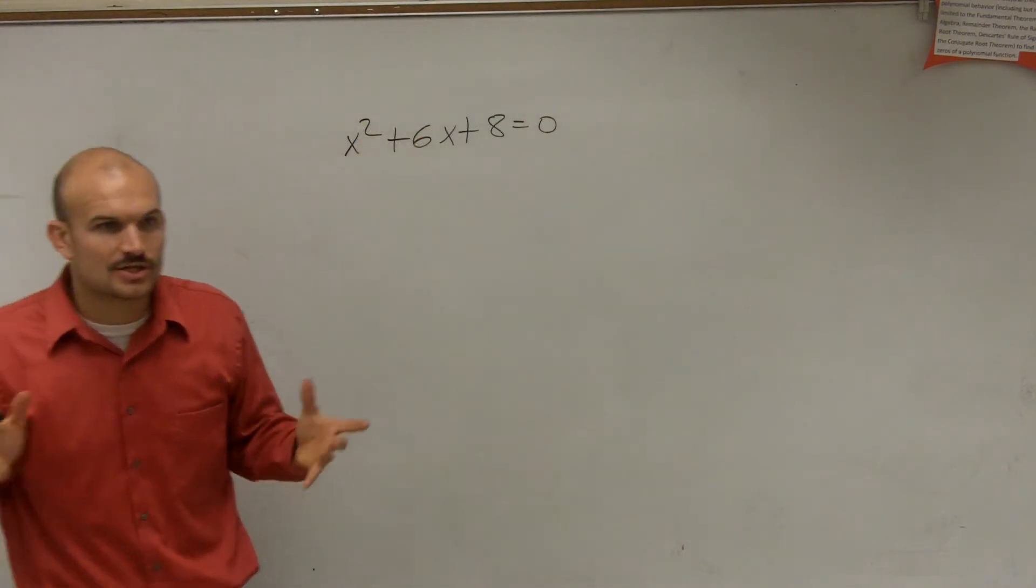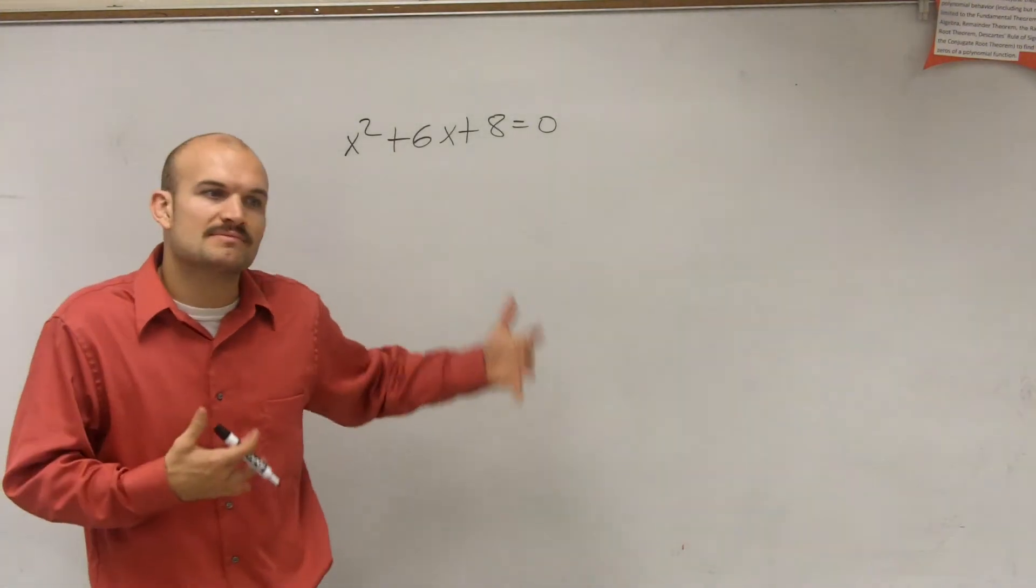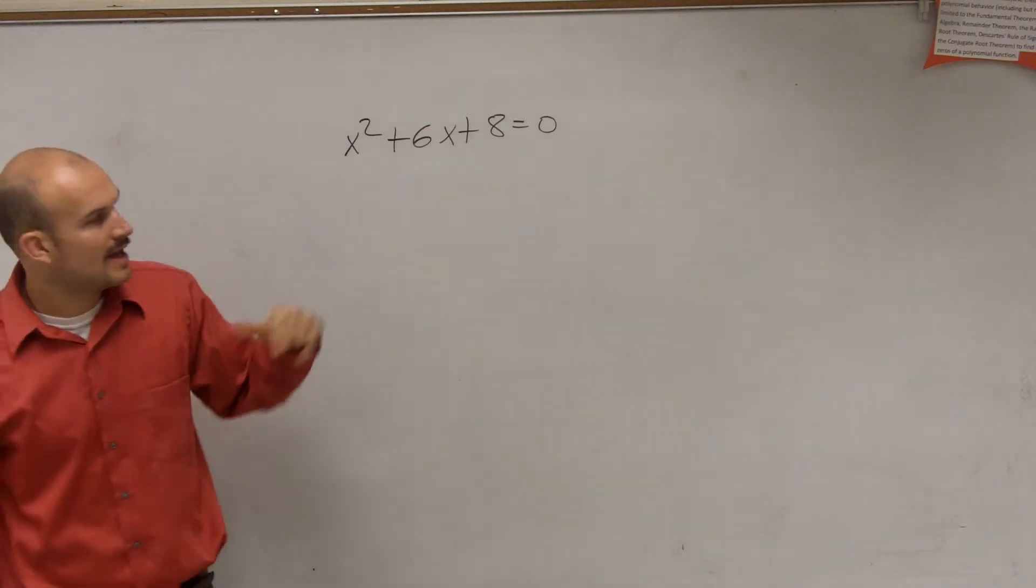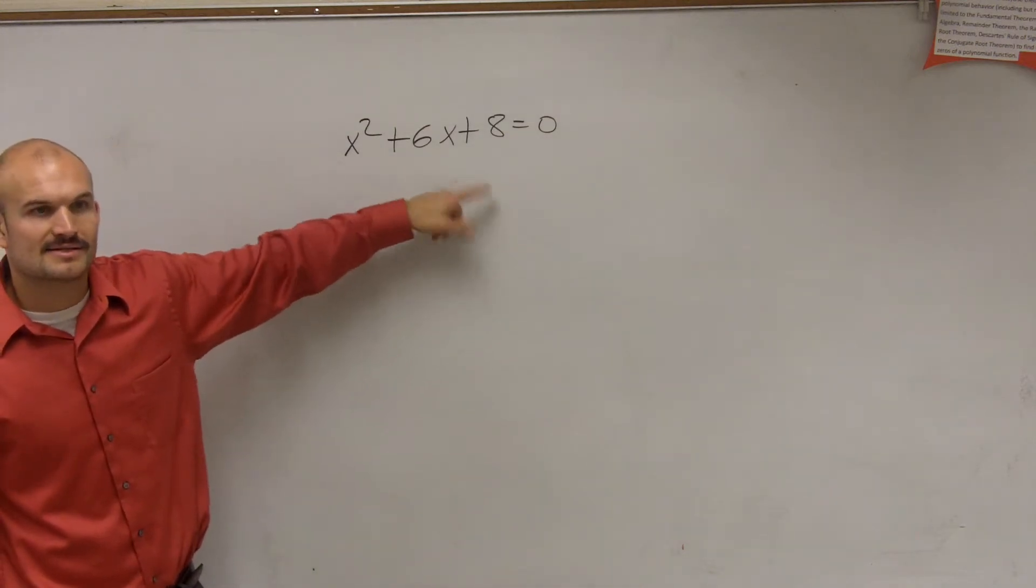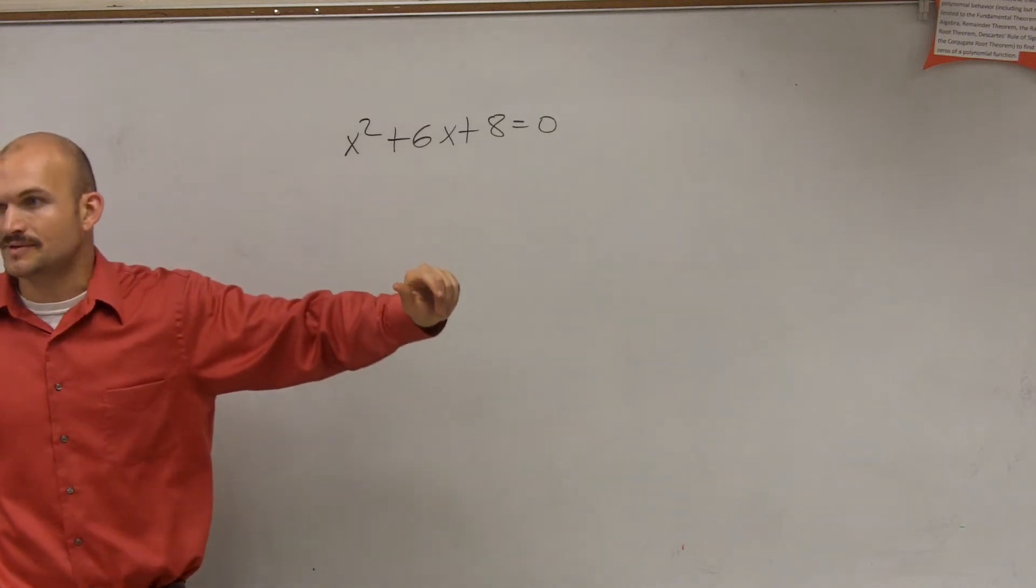However, it's good to go over the method of completing the square with problems that we know are already factored because we can easily find the answer. Hopefully by now you guys can factor this in your head, set them both equal to zero, and say that x equals negative 2 and x equals negative 4.